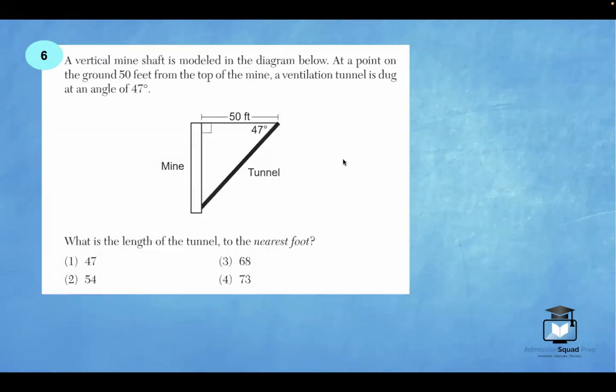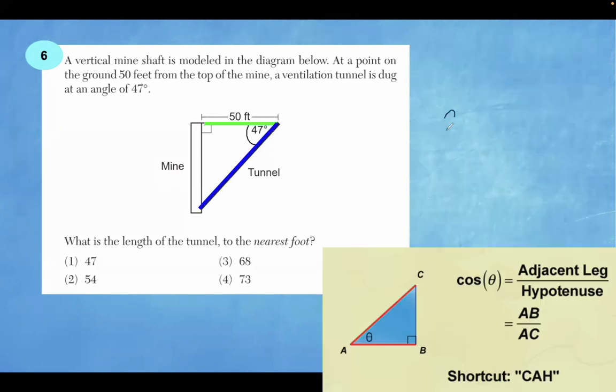Let's continue. Number 6. A vertical mine shaft is modeled in the diagram below. At a point on the ground 50 feet from the top of the mine, a ventilation tunnel is dug at an angle of 47 degrees. What is the length of the tunnel to the nearest foot? When we look at this diagram, we have a right triangle here, which means we can use trigonometry to solve. We have an angle of 47 degrees. We have a line segment that's 50 feet long, and we're looking for the hypotenuse. Notice the 50 foot line segment is adjacent to the angle of 47 degrees. So which trig ratio incorporates the line segment that's adjacent to the angle and the hypotenuse. That is cosine.